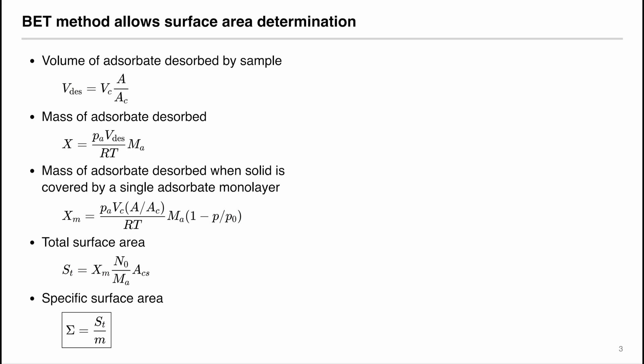The volume of adsorbate desorbed by sample V desorption equals V of c, which is the calibration volume, multiplied by A divided by A of c, where A is the sample integrated reading and A of c is the calibration integrated reading. These are measured by the instrument.